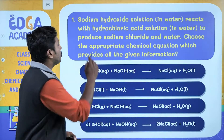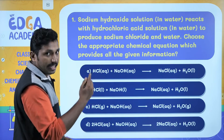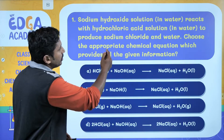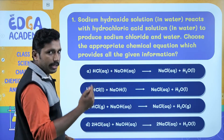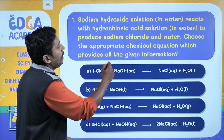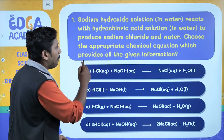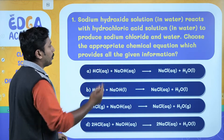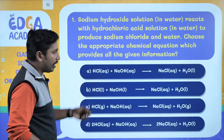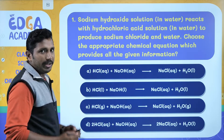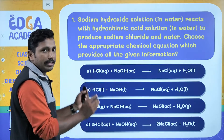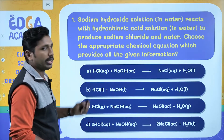The question is: sodium hydroxide solution in water reacts with hydrochloric acid solution, that is also in water, to produce sodium chloride and water. Choose the appropriate chemical equation which provides all the given information. We are given 4 different options and we need to choose the correct chemical equation that describes the above statement.